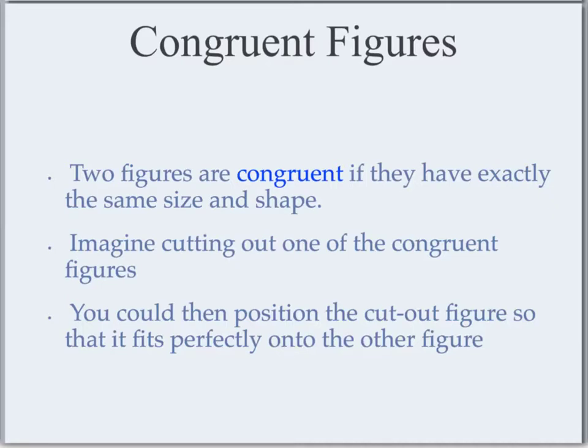If you laid one figure on top of the other and a part of the figure was sticking out — an angle that was a little bit bigger than the other, or a side that was longer than the other — then we would say those are not congruent figures.